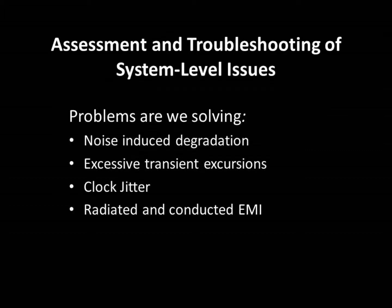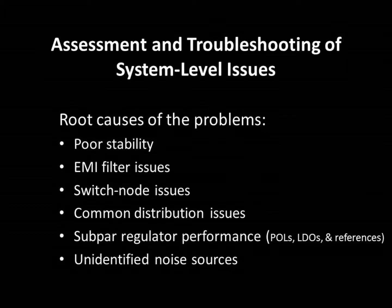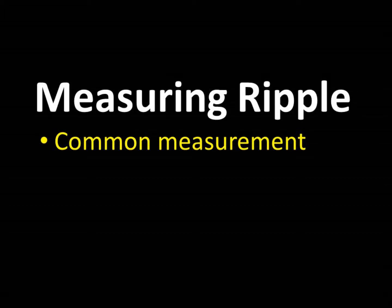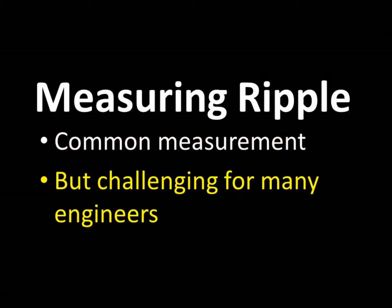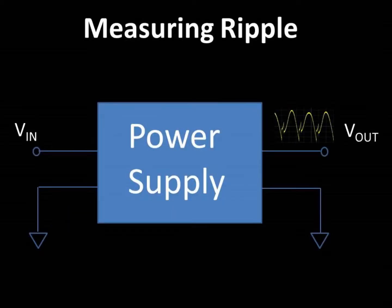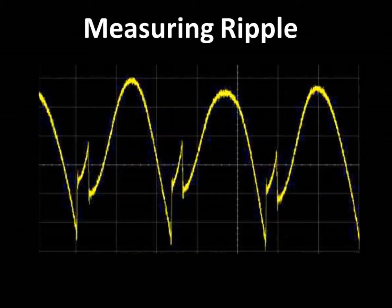In our business, we are frequently called on to assess and troubleshoot system level issues, many of which are related to the power distribution network. The causes of customer issues are generally covered in this very short list. In the previous video, we noted the impact of switching frequency jitter on the output ripple and noise produced by a point of load regulator. Ripple measurement is a very common measurement for many circuit designers, particularly power system designers. Nevertheless, this is a measurement that many engineers struggle with, so in this video we'll take a few moments to discuss how to properly measure ripple.